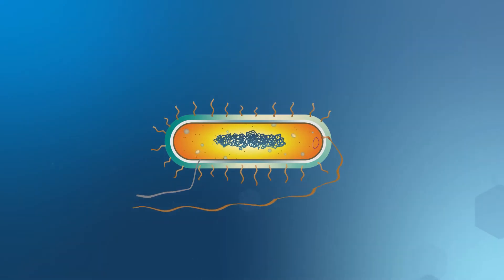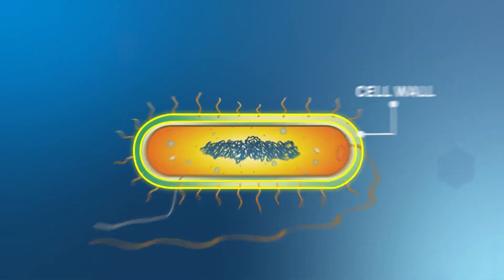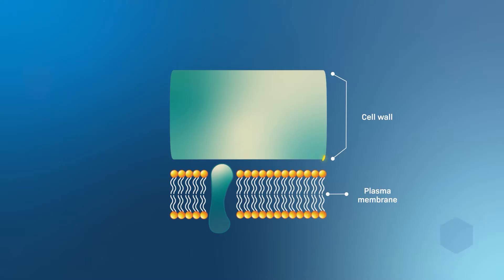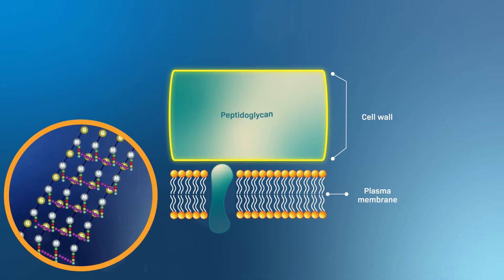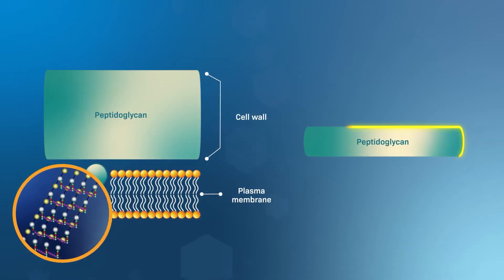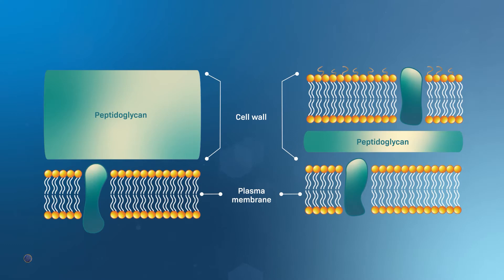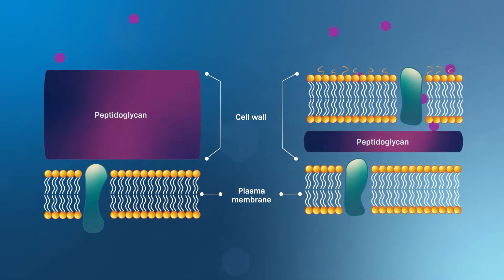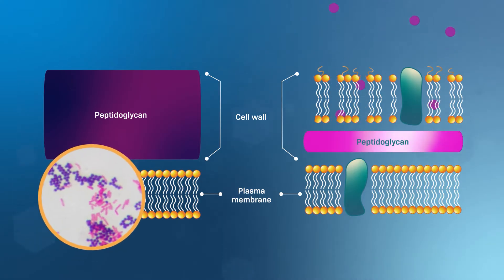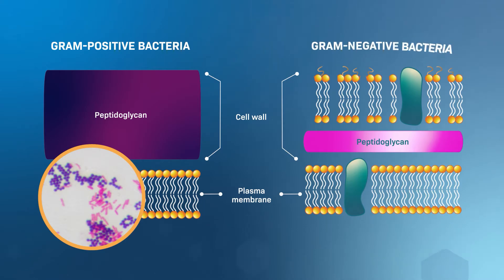Bacterial cells are protected from the environment by a cell wall. Cell wall composition can vary. Some bacteria are surrounded by a thick layer of a sugary substance called peptidoglycan. Others have a thinner peptidoglycan layer sandwiched between two membranes. These cell walls behave differently when treated with a visualizing stain and viewed under a microscope,